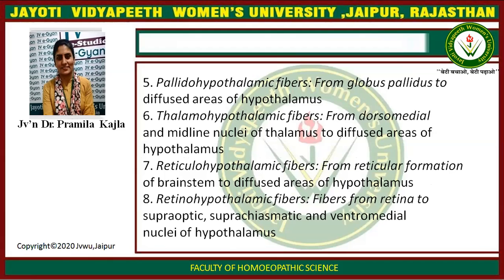Thalamo-hypothalamic fibers run from the dorsomedial and midline nuclei of the thalamus to the diffuse area of the hypothalamus. Reticulo-hypothalamic fibers run from the reticular formation of the brainstem to the diffuse area of the hypothalamus. Retino-hypothalamic fibers run from the retina to the supra-optic, supra-chiasmatic, and ventromedial nuclei of the hypothalamus.